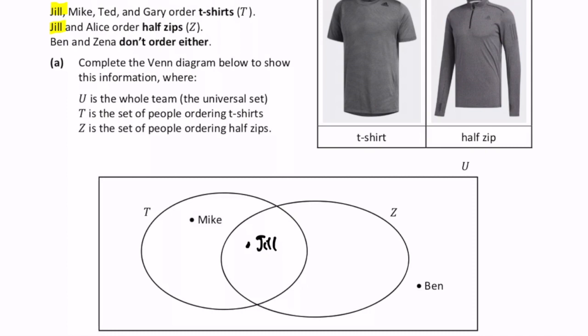Mike, Ted and Gary only order t-shirts. So we have Mike here already, but I'm going to add in Ted and Gary. And Alice orders a half-zip but not a t-shirt.